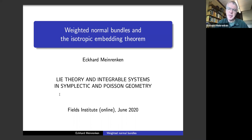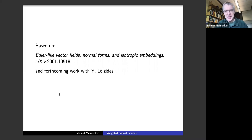The isotropic embedding theorem I'm going to talk about at the end is not really a big main result. It's more like a case study for these weighted normal form theorems, which illustrates nicely what's going on. Let me start out by giving you the references. There's one small paper I posted on the archive in January, which develops this theory in the case of weightings up to order two, where you have linear and quadratic directions. The general case will be developed in work with Yannis. But let me start out with some earlier work to motivate this weighted story.